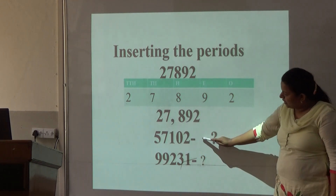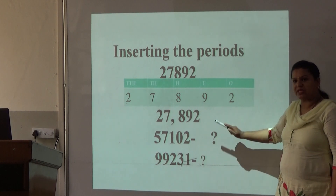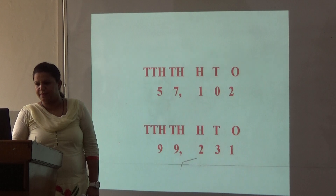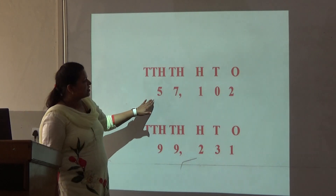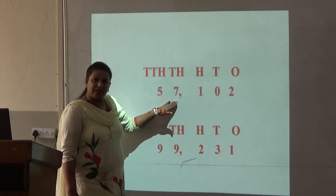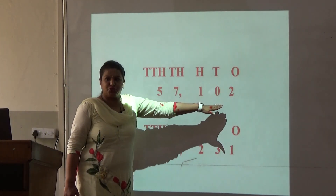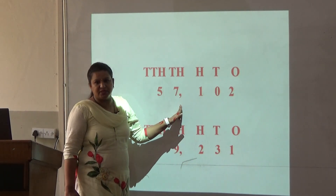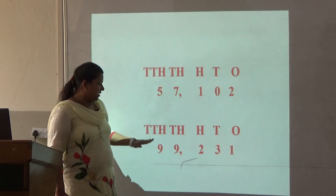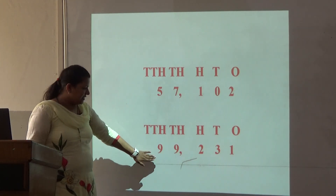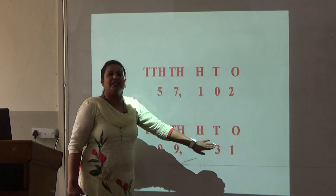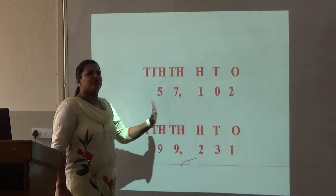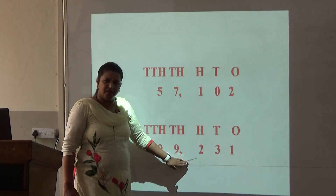Can you try inserting the period in these 2 numbers? Let us see in the next slide. This is 57,102. So to separate the families, we insert a period. Let us read this number: 99,231. So to separate the 1000's from the 1's family, we insert a period.